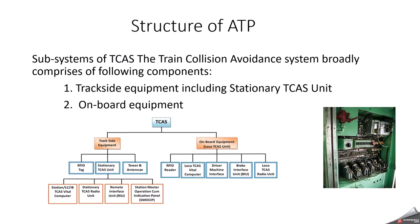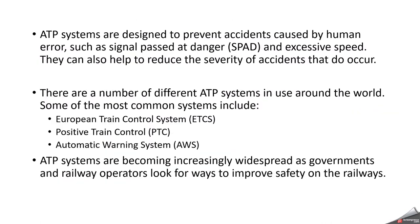The structure of the Automatic Train Protection system can be divided into two components: trackside equipment and onboard equipment. Trackside equipment includes RFID tags, stationary TCS unit, tower, and antenna. Onboard equipment includes loco TCIS vital computer, driver-machine interface, brake interface unit, RFID reader, and loco TCIS radio unit. The two trains send information to the station master, enabling communication between entities.